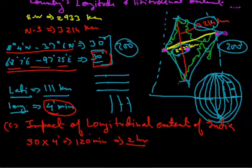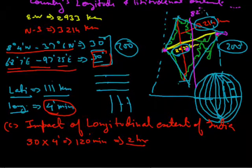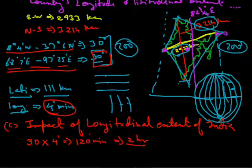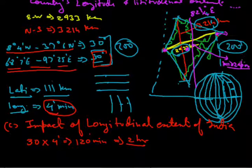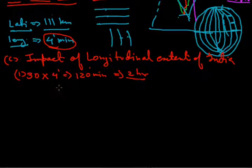The best line to use is one that passes through the center of the country. That line is 82 and a half degrees east, which passes near Mirzapur, near Allahabad. This is chosen as the Indian Standard Time meridian. So the first impact of longitudinal extent is now clear.